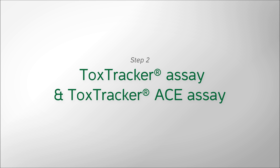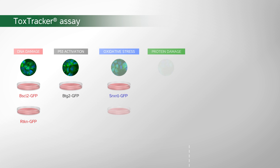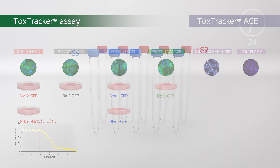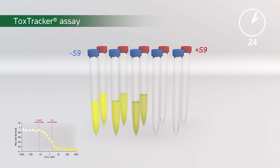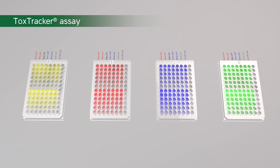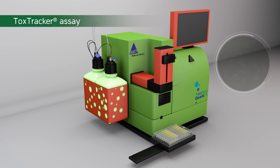Next, the compounds are tested in the six Toxtracker reporter cell lines for induction of DNA damage, p53 activation, oxidative stress, and protein damage. In Toxtracker ACE, an extensive cell cycle and polyploidy analysis is included. The reporter cells are exposed to five compound concentrations with or without S9. After 24 hours of exposure, induction of the different GFP reporters and relative cell viability is measured using any high-throughput flow cytometer.